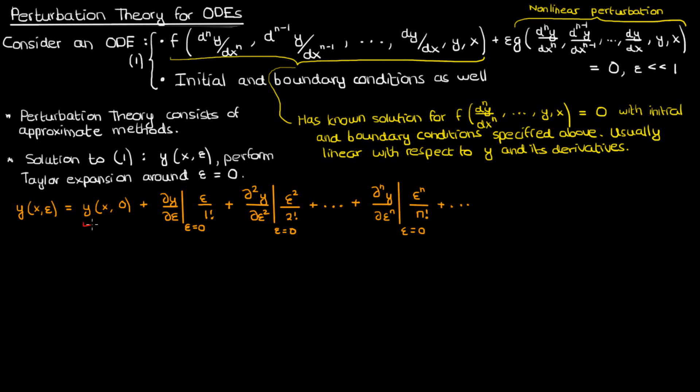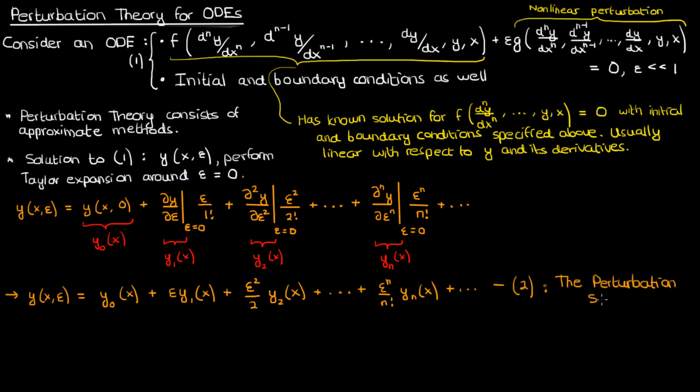So what I'll do is I'll let this y of x, and all these partial derivatives equal y0, y1, y2, etc. of x. And when I do this substitution, our perturbation solution looks like this. I'll call this equation 2. The more terms we get in this perturbation solution, the better our solution will approximate the perturbed differential equation.